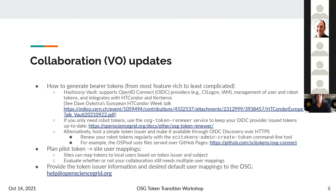We have an RPM with some configuration, so to set up your vault server you can just install that, and your vault server will act as your interface to your OIDC provider like CI Logon or IAM. Your users or service managers can then access tokens or talk with Vault to get user tokens or robot tokens for your pilots or storage. A lot of Dave's work has been improving integration with Condor and local Kerberos. Check out Dave's talk from the European HTCondor Week for more details.